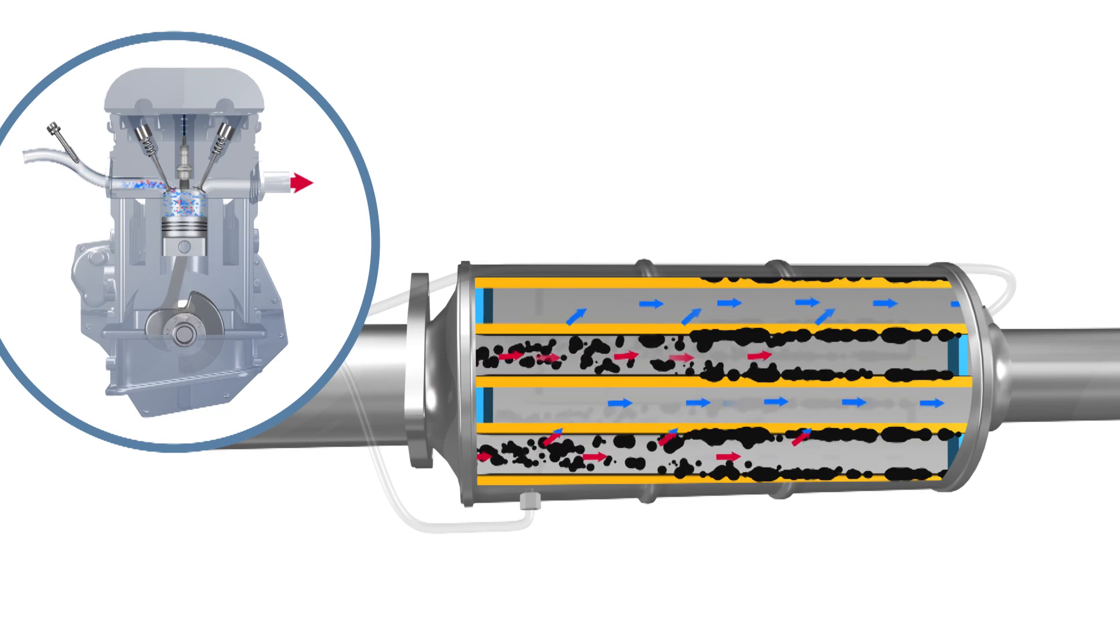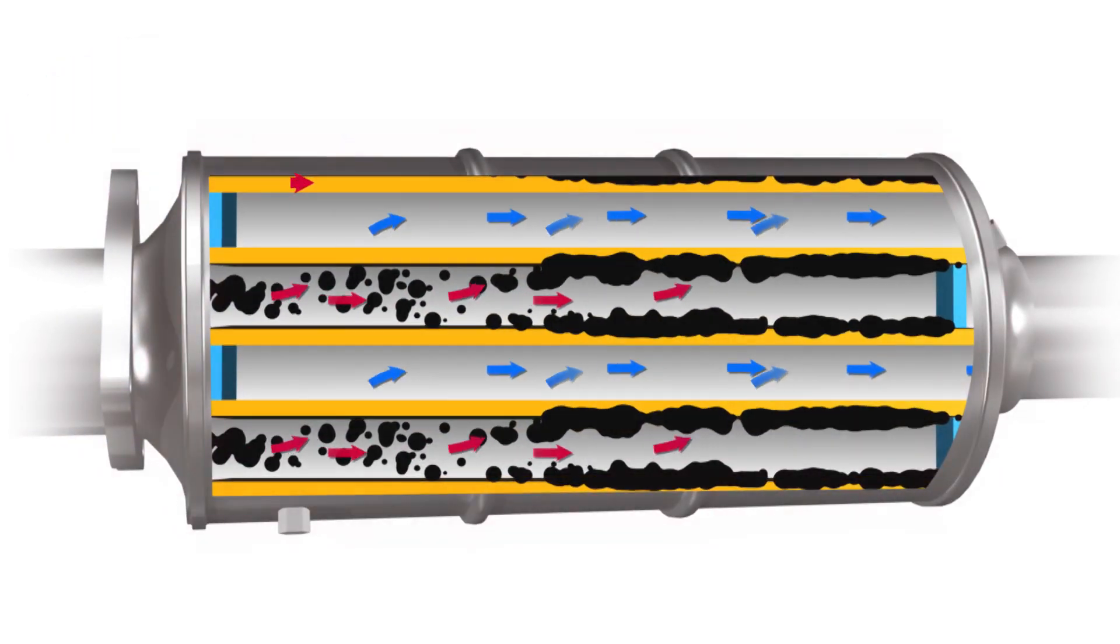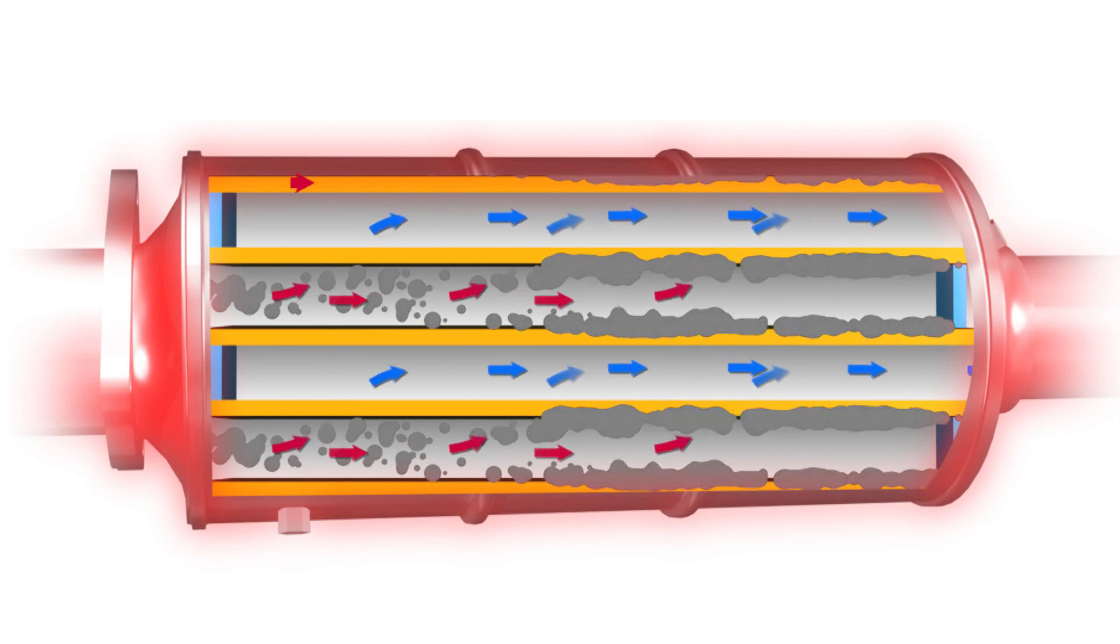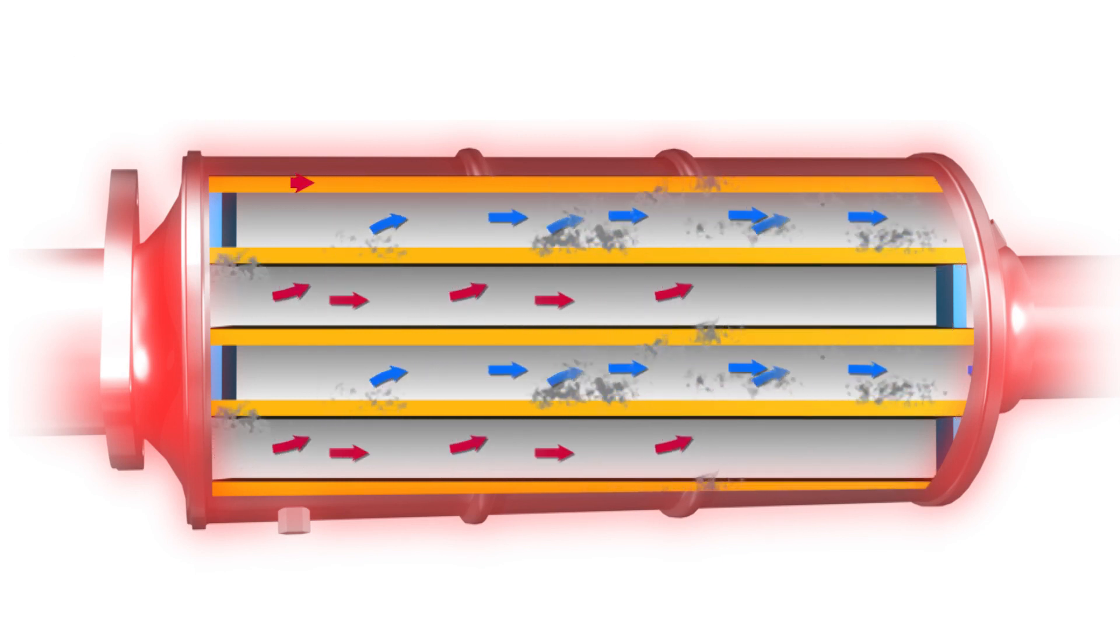The soot particles accumulate in the channels of the DPF and are burned off at regular intervals through a process called regeneration. This prevents the DPF from clogging.